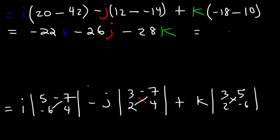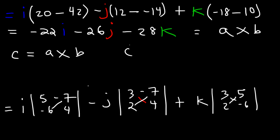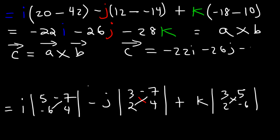So this is the value of the cross product of A and B. Let's say that C is the cross product of A and B. That means vector C is negative 22i minus 26j minus 28k.